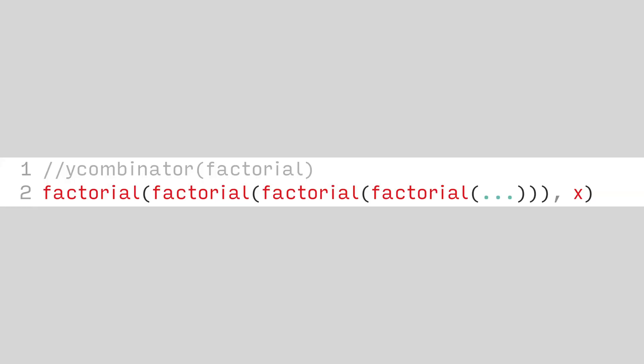This works because the Y-combinator creates an infinite chain of functions where each function has itself passed in as input. So all you need to do is take that function and call it. Even with an infinite chain of functions, the calculation stops because the function itself is in charge of when to call the next function, and can decide to ignore it at any time. So in our case, after the number reaches 0, the function passed in doesn't matter anymore, and it just returns 1 no matter what.